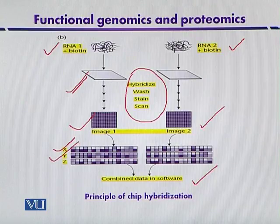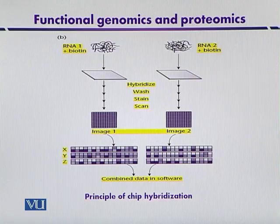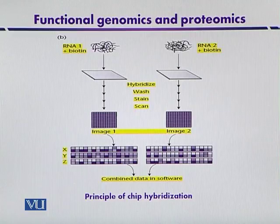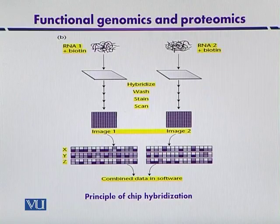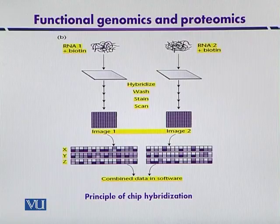This is the overall principle of chip hybridization. The basic difference is that here we mainly use synthetic DNA fragments, whereas in the case of spotted DNA microarrays, the DNA is fragmented and then immobilized on the chips. The sensitivity of both techniques is more or less the same.